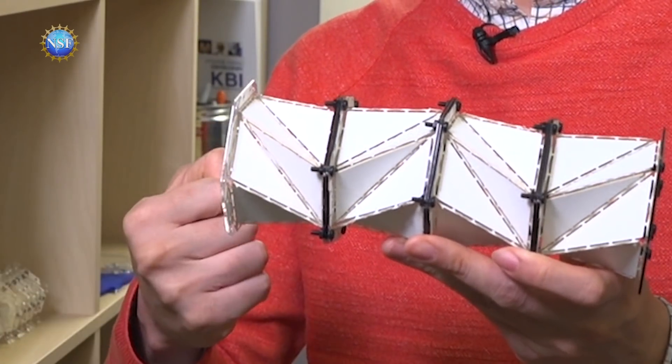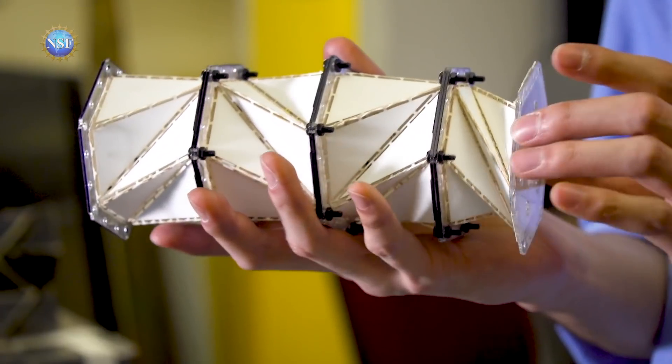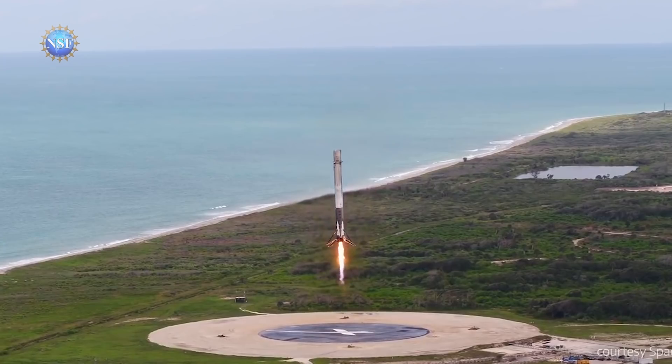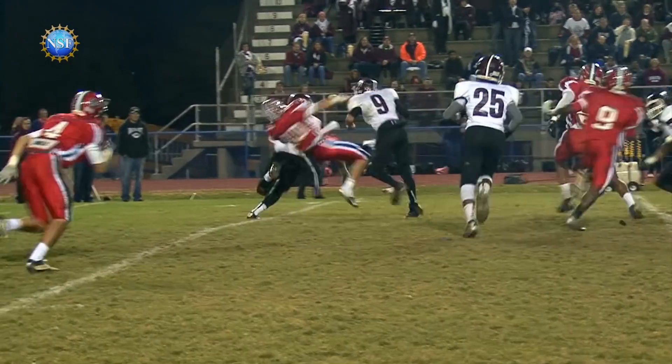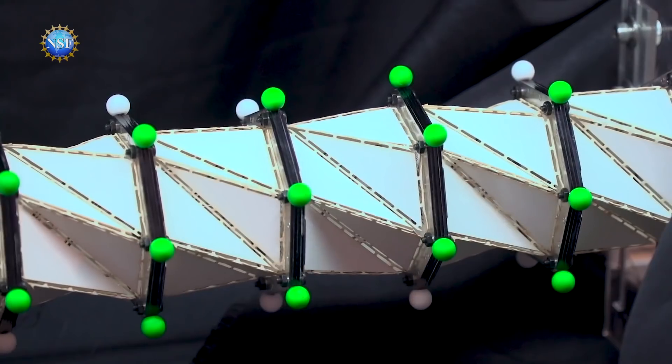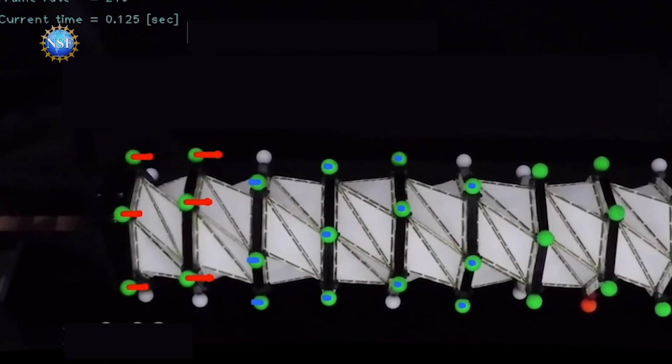The researchers say this metamaterial has the potential to buffer all sorts of impacts from landings to car accidents to sports. The next step is to create a composite material for a specific application of the design.